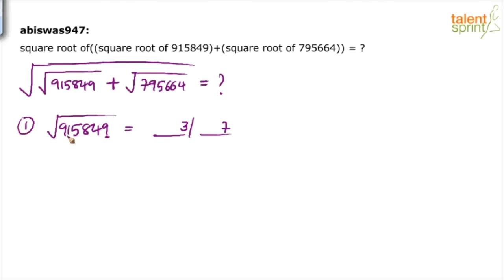There are 6 digits in the number, so the square root will be a 3-digit number. That completes step 1. Step 2: forget about the last 2 digits and look at the remaining part, which is 9158. We need the highest perfect square less than 9158.